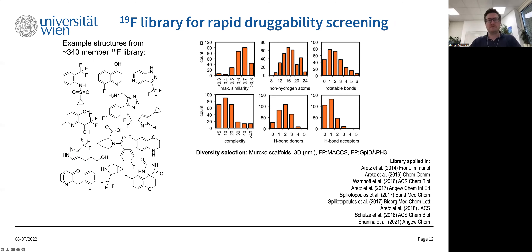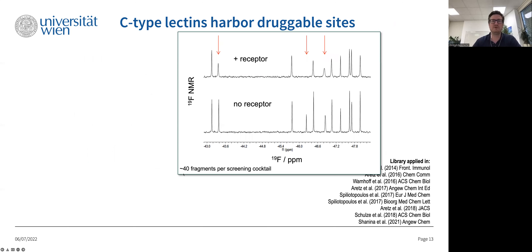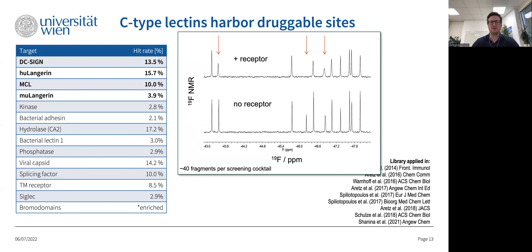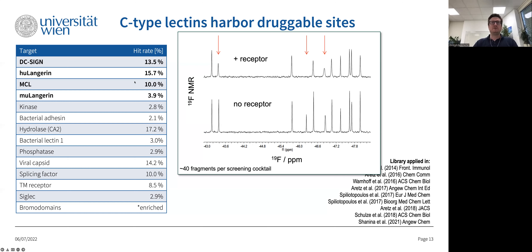We used a fluorinated fragment library of around 340 members chosen for high diversity based on scaffolds, three-dimensionality, MACCS fingerprints, and pharmacophore fingerprints. Because all of them are fluorinated, we can put up to 40 fragments in one screening cocktail. Each fragment gives rise to a single peak, and when you add the receptor, the lines completely disappear or broaden significantly — a very fast readout. Recording such a spectrum takes about a minute, so we can screen the entire fragment library in about half a day, with another day for data evaluation.